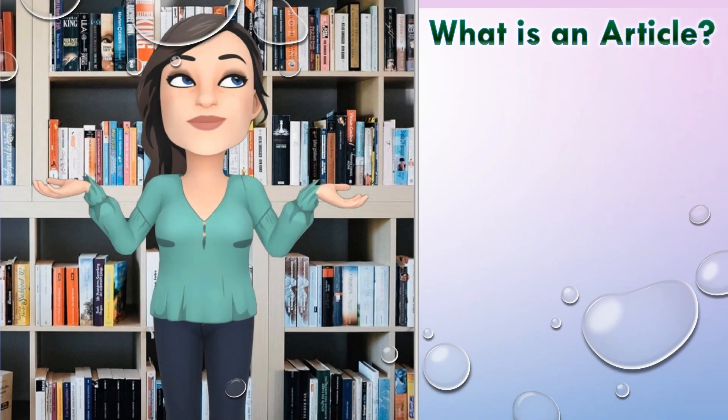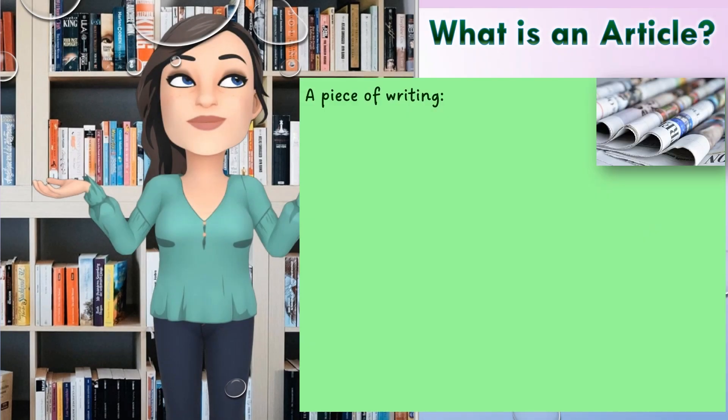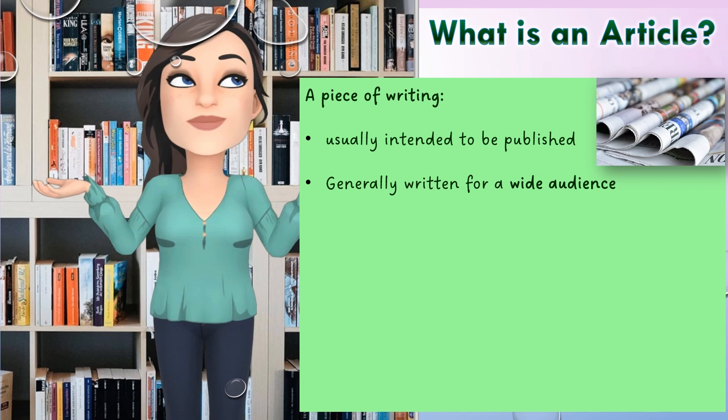What is an article? Well, it's a piece of writing that's usually intended to be published either in a newspaper, a magazine, a journal, or online as well. Generally it's written for a wide audience, which means it's accessible to all. So a wide variety of different people will be able to read it, and we need to ensure we've used appropriate language so it can be understood by all.